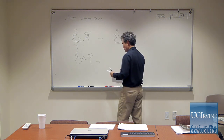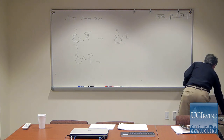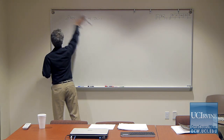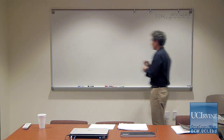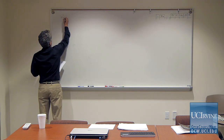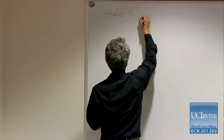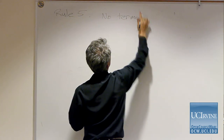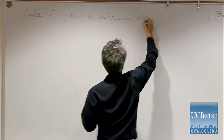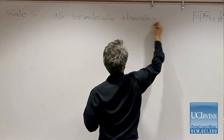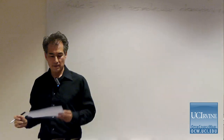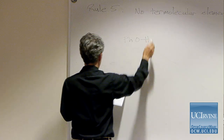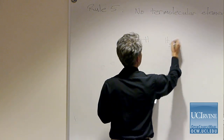The three-arrow rule is a safety device to keep you from going out of control. Rule number five: no termolecular elementary reactions. The goal of mechanistic arrow pushing is to break reactions down into a series of elementary reaction steps.